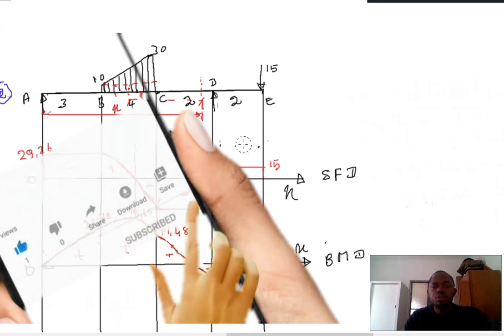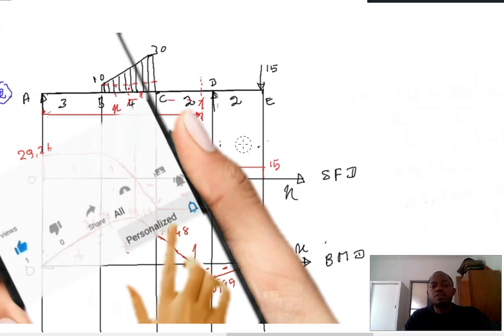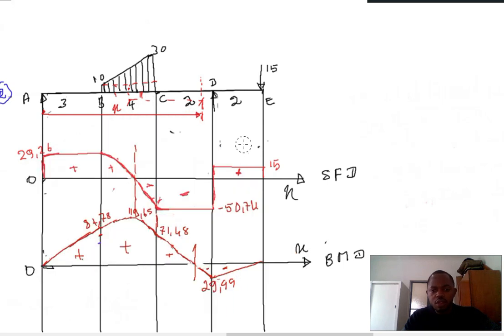In this video today we are going to demonstrate how to calculate the point of counterflexion. The point of counterflexion is the point at which the bending moment changes its sign, and the bending moment is also equal to zero at that point.